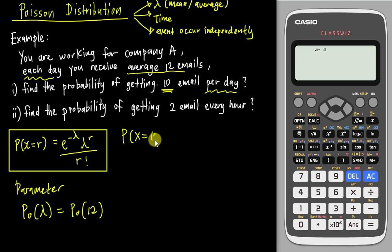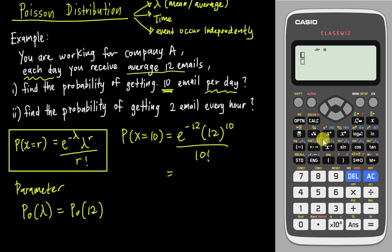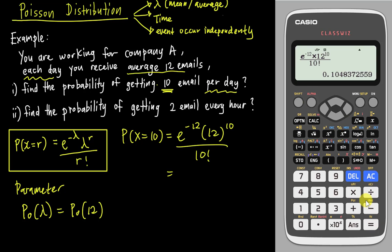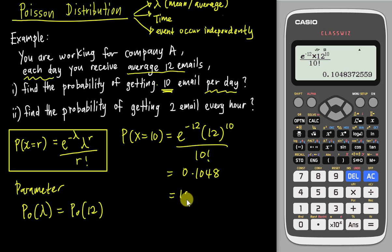So P(X = 10) = e to the power of negative 12, multiplied by 12 to the power of 10, divided by 10 factorial. Using the calculator — enter e to the power of negative 12, multiply by 12 to the power of 10, divide by 10 factorial. The calculator gives approximately 0.1048, which is about 10.48%.